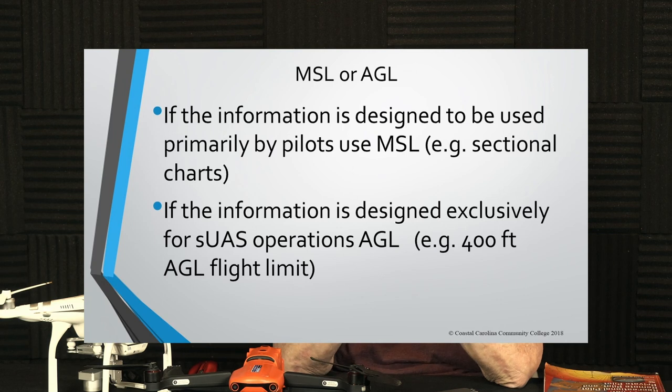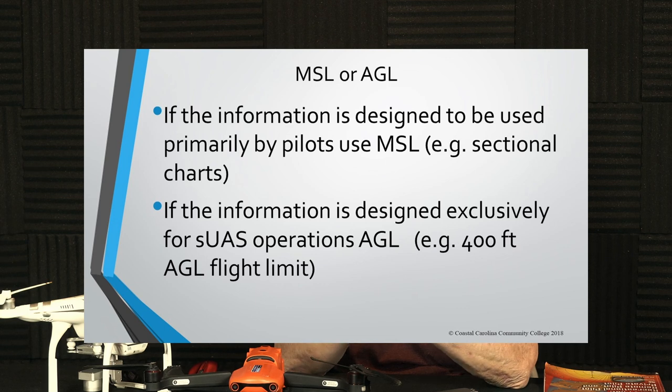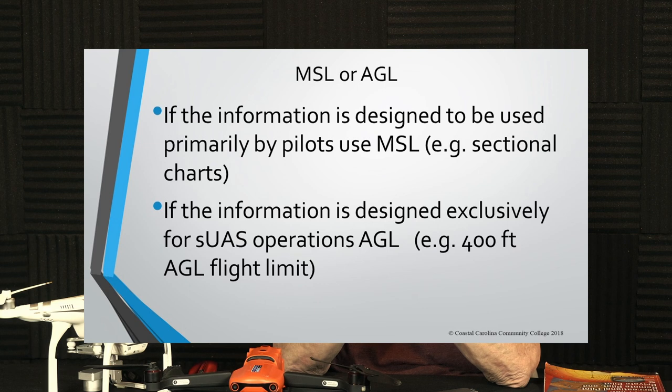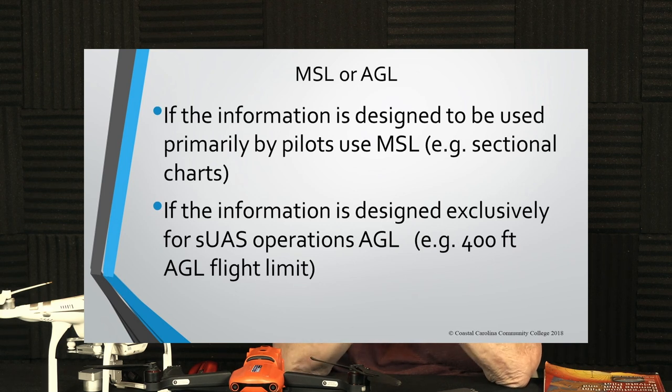MSL versus AGL: if the information is designated primarily for pilots, they use MSL — they need barometric correction to correct their altimeters, and our drones do not have the capability to do MSL. If the information is designated for drone use, it is reported in AGL. We operate in AGL; pilots operate in MSL. Be careful that you read the right height when answering questions.